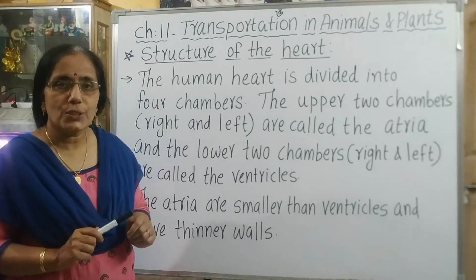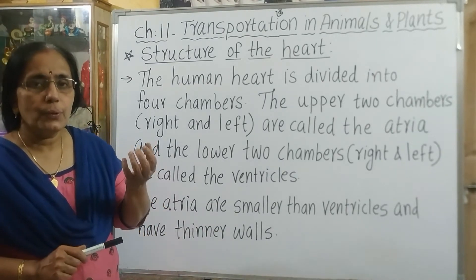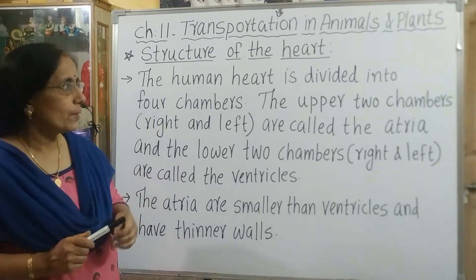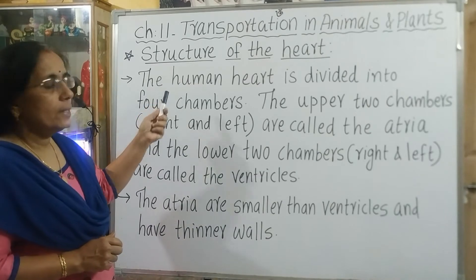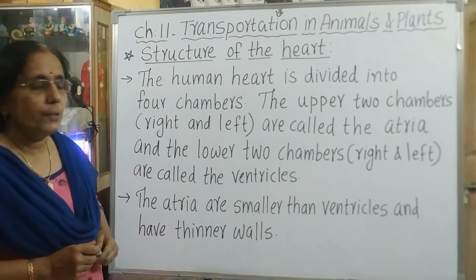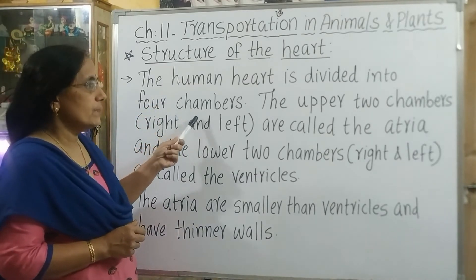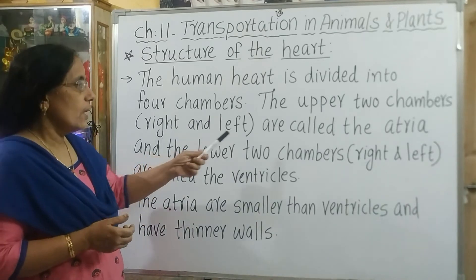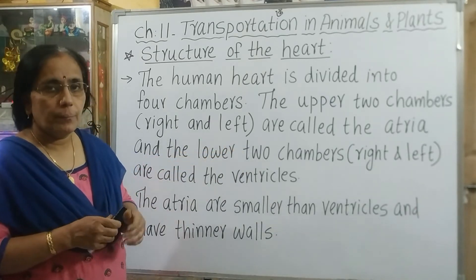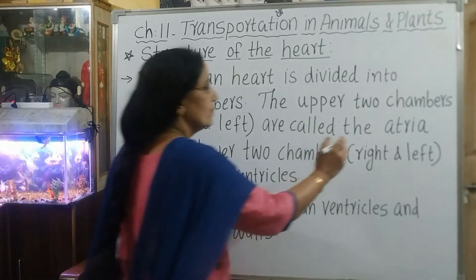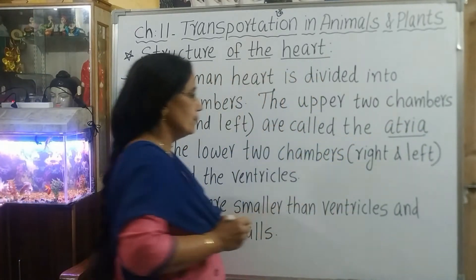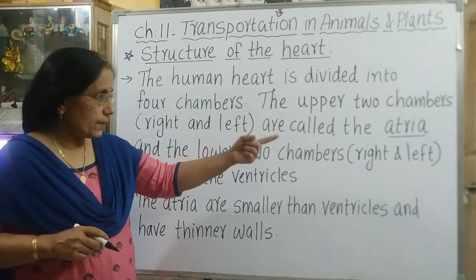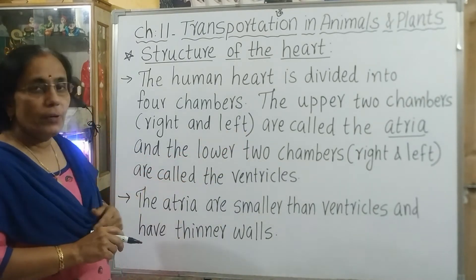Now let us see the structure of the heart. The human heart is divided into four chambers. The upper two chambers, that is right and left, are called the atria. And the lower two chambers, both right and left, are called the ventricles.